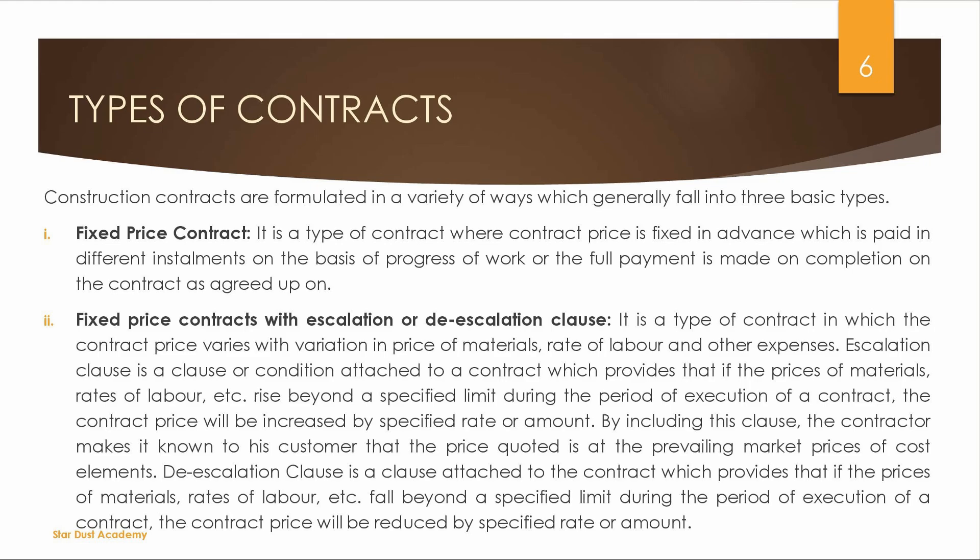There are many types of contracts. The first one is Fixed Price Contract. This is a type of contract where the contract price is fixed in advance. We agree on the contract price before the work begins.